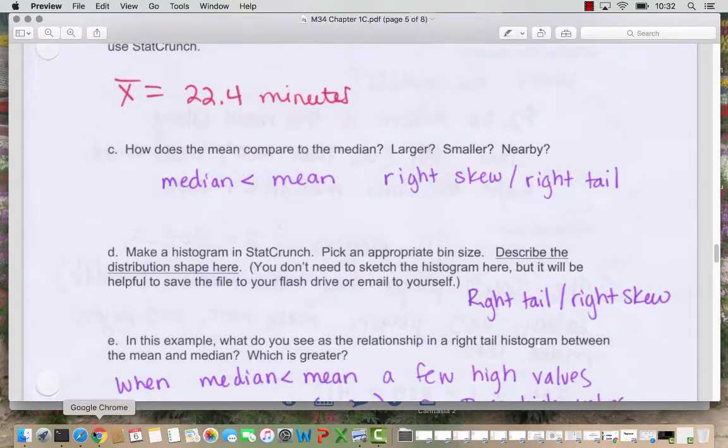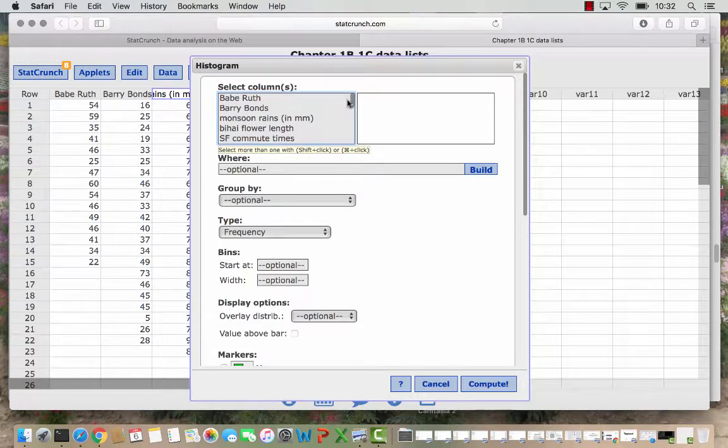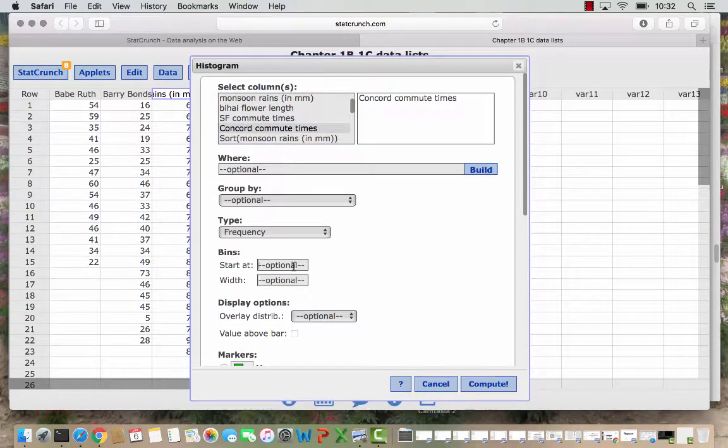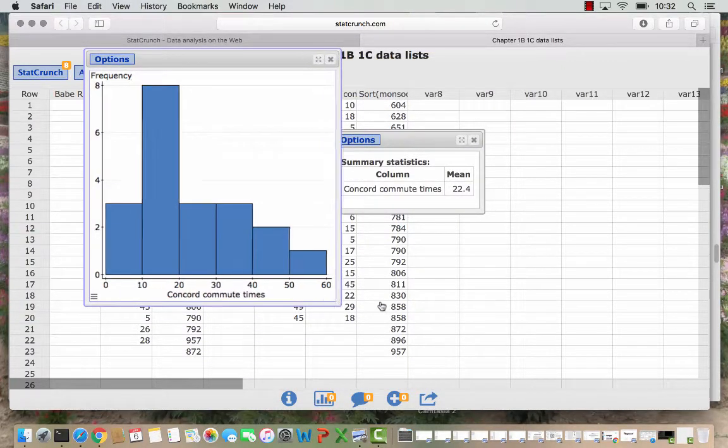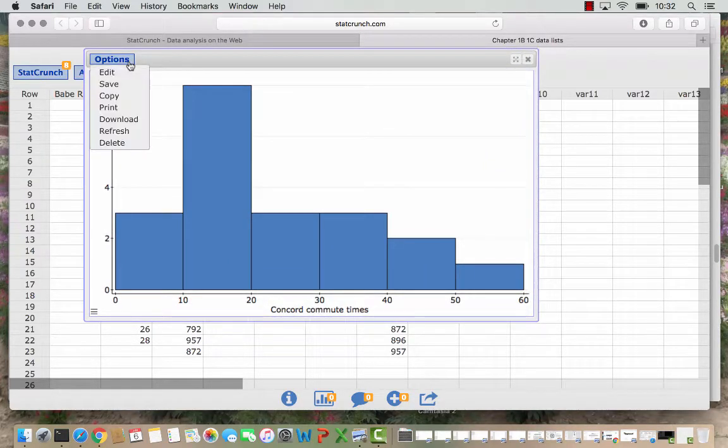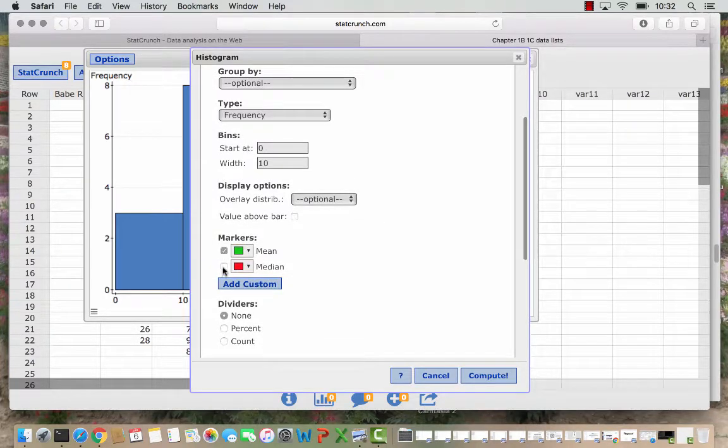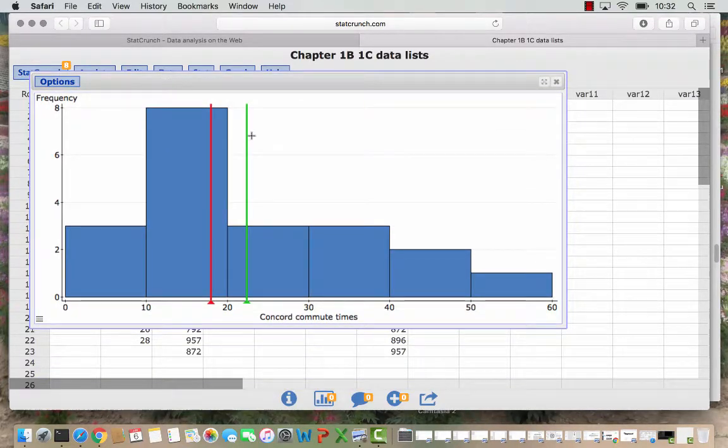We've got a histogram and these are the Concord commute times. And let's have our bins go by tens again. We'll start at zero. And we see here just as we saw in the stem plot, there is a right tail. And if we want to put the markers on here, Options Edit, choose our markers for mean and median. We see the mean is on the right side, indicating that a few high values are pulling the mean up and creating that right tail.